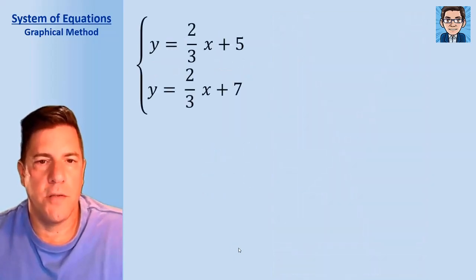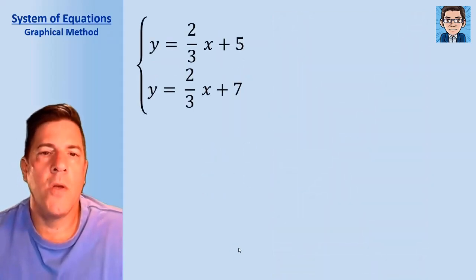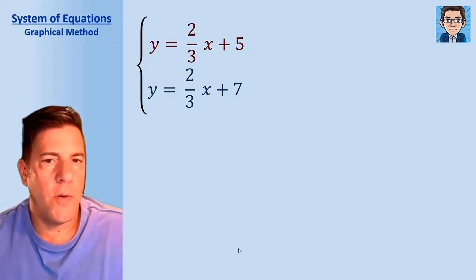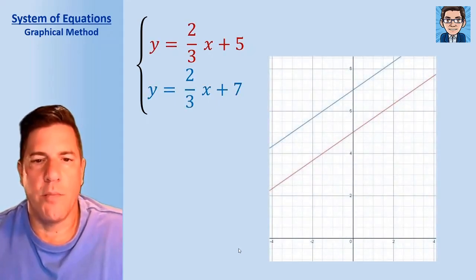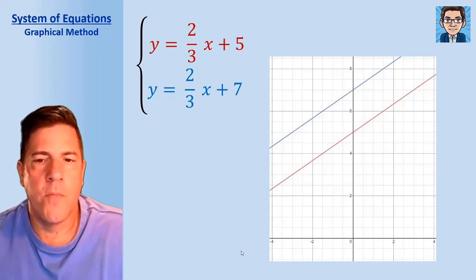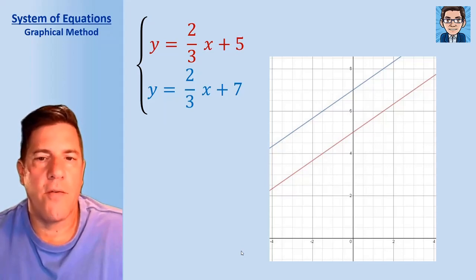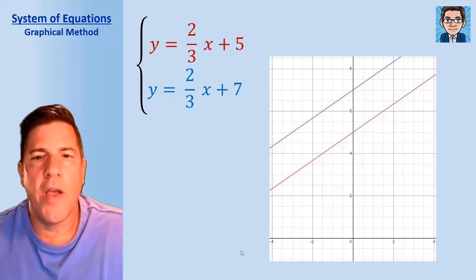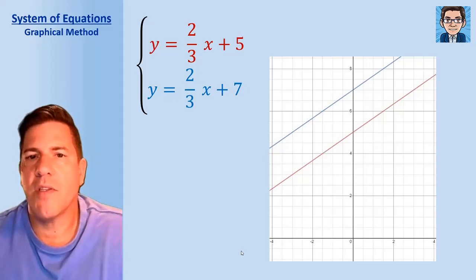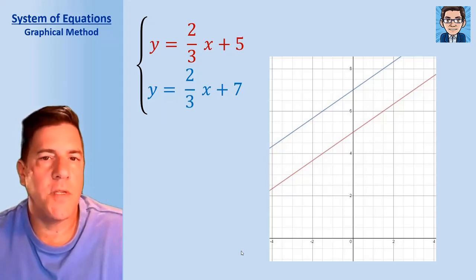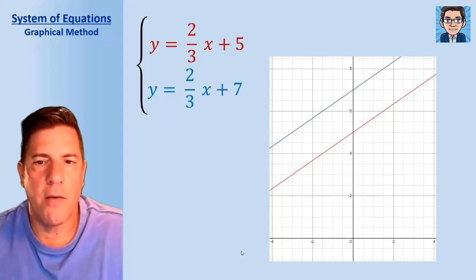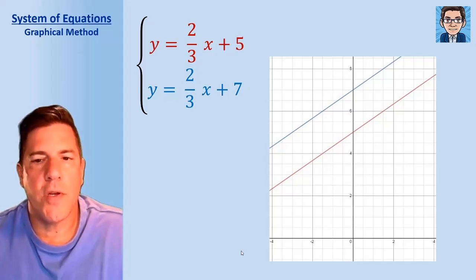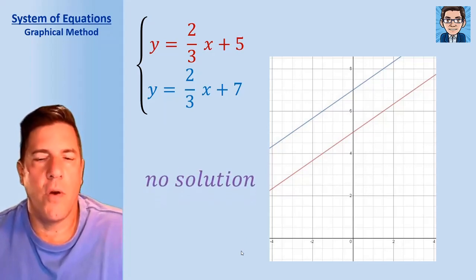Let's look at another system. Graphing the first equation in red and the second in blue, these two lines never meet anywhere, so there's no point on both lines. Notice both have a slope of two-thirds — both equations have two-thirds x, so they have the same slope. Lines with the same slope are parallel, so they never meet. In this situation, we have no solution.